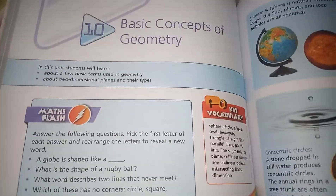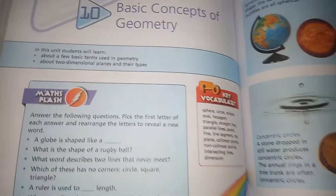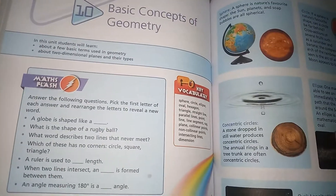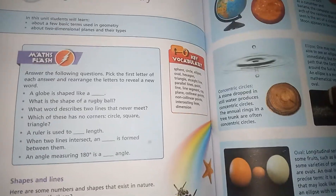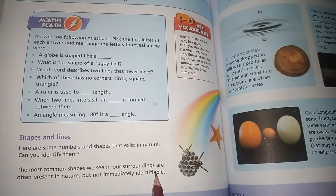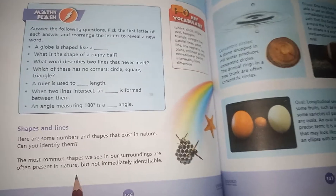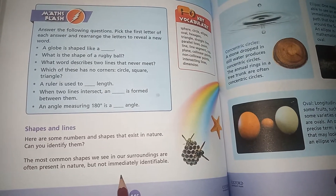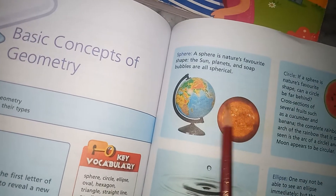Today we are going to start Chapter 10, that is Basic Concepts of Geometry. For geometry we have to face different shapes, figures, and lines, so before starting this chapter we will discuss the most common shapes that we see in our surroundings. They are also present in nature. Some are shapes like a sphere, some are circles.